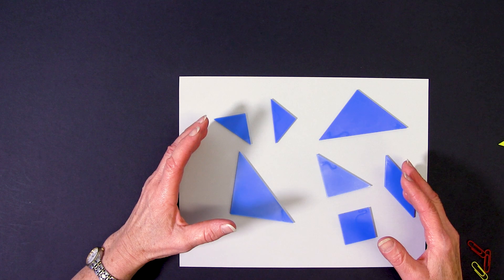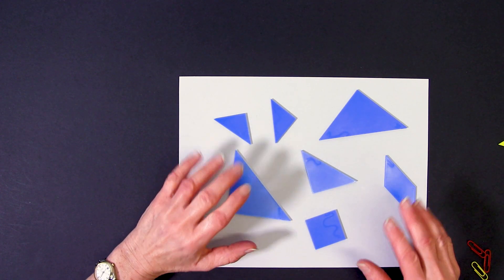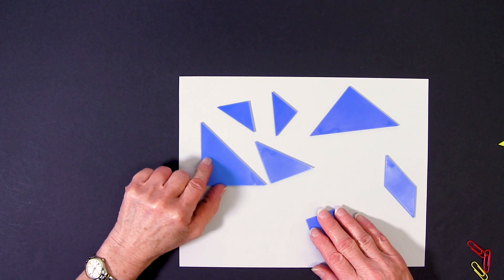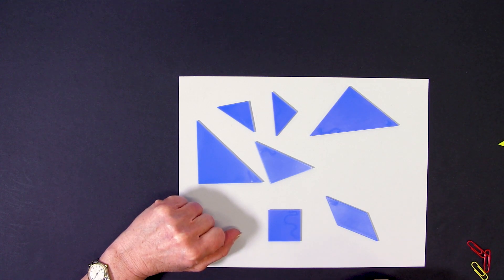These are tangrams. There are seven individual shapes in a complete set. We have five shapes that are right angle triangles. We also have a square and a parallelogram.